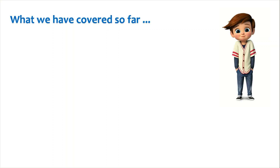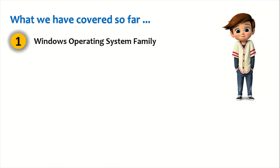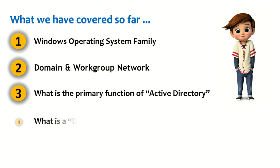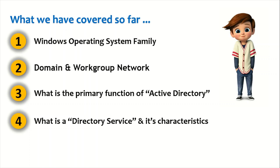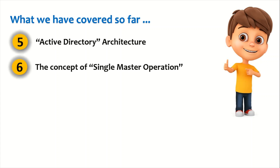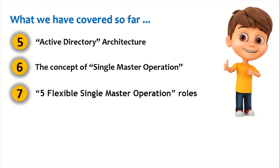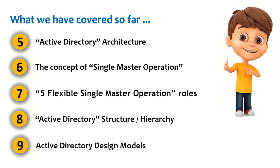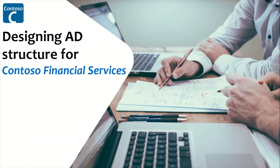Let's look at what we have covered so far. We have covered the Windows operating system family, the difference between a domain network and a workgroup network, what is the primary function of Active Directory, what is a directory service, the characteristics of a typical directory service, Active Directory architecture, the concept of single master operations, all five FSMO roles, Active Directory hierarchy or structure, and the Active Directory design models in our earlier videos.